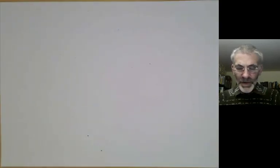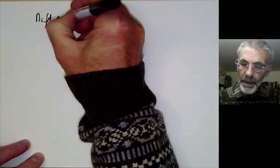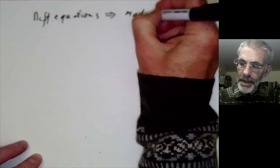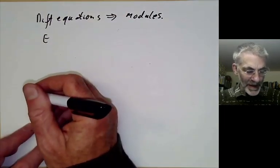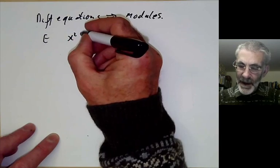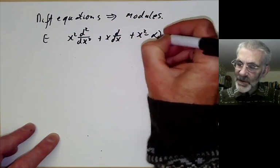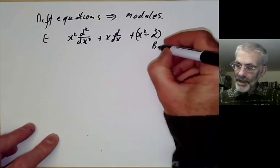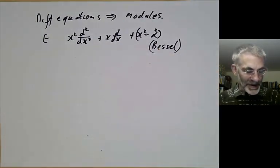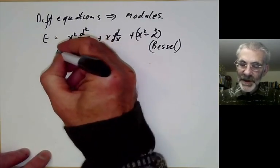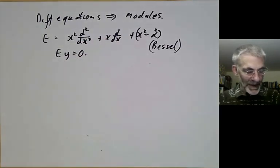What you can do is turn differential equations into modules over this ring. Let's see how this works. Suppose we take a differential operator - homogeneous and linear to make things easy - we could take x²(d²/dx²) + x(d/dx) + x² - α². This is basically Bessel's equation. If E is this differential operator, you're trying to solve E(y) = 0 where y is some function on the reals. If you can find a solution, that will be a Bessel function.